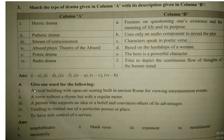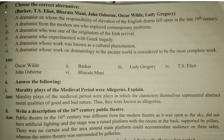Question 4: Give one word for the following. An oval building with open-air seating built in ancient Rome for entertainment events is an amphitheater. A verse without a rhyme but with a regular meter is blank verse. A person who supports an idea or belief and convinces others of its advantage is an exponent. Tending to remind one of a particular person or place is reminiscent. To have sole control of a service is a monopoly.